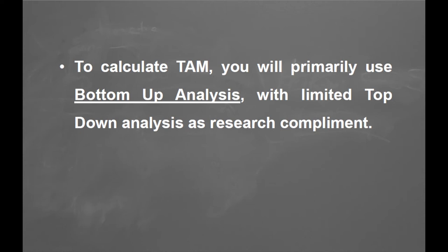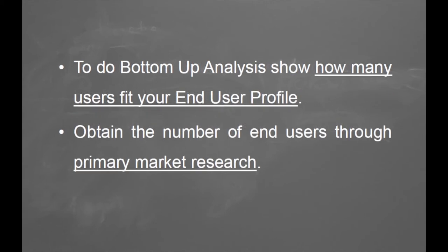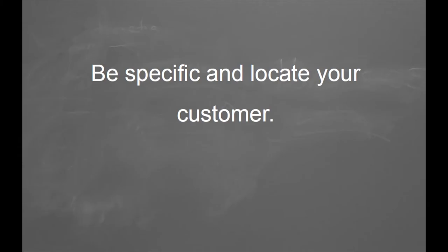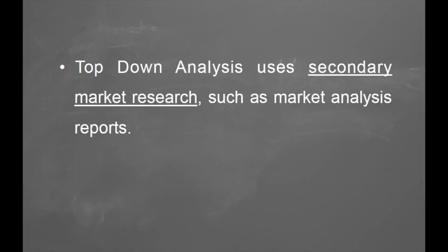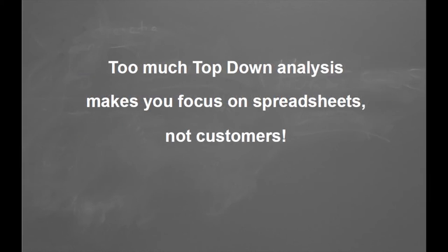The bottoms-up analysis has to do with going out and counting noses — finding out exactly who those people are from your primary market research. Once you've identified how many there are that fit your end-user profile, you have a very good start; you know where each customer is and how much they're going to spend. A tops-down analysis starts with getting reports from places like Forrester, Gartner, or Yankee Group to check how many users meet your characteristics, but it's imperfect — no one's done the report you really want yet. If you do too much tops-down analysis, you'll end up locked in spreadsheets, and I have never seen a customer hiding in a spreadsheet cell.